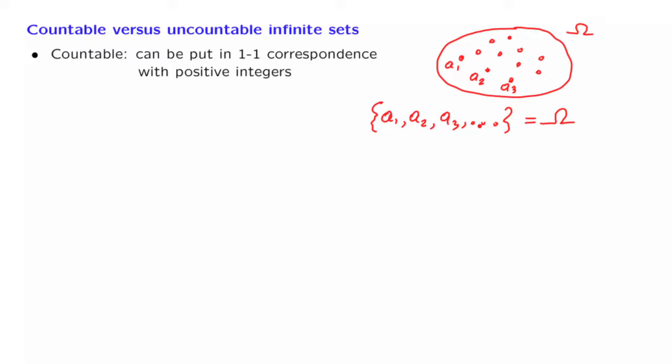So what are some examples of countable sets? In a trivial sense, the positive integers themselves are countable, because we can arrange them in a sequence. This is almost tautological by the definition.